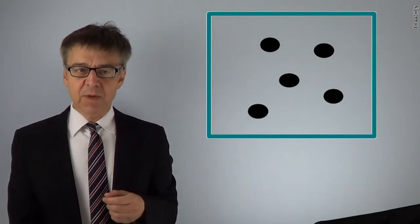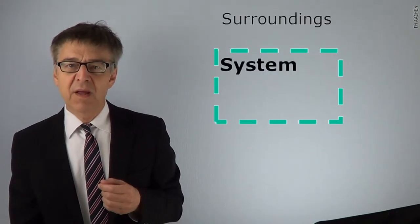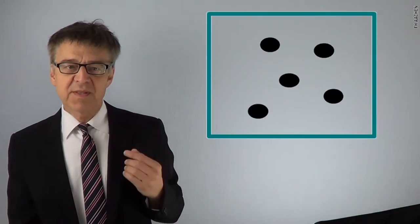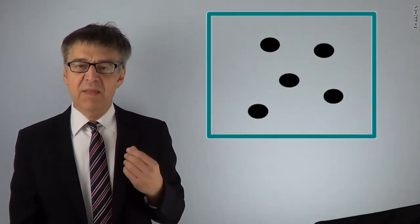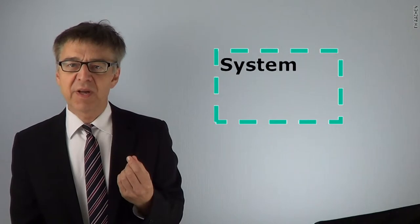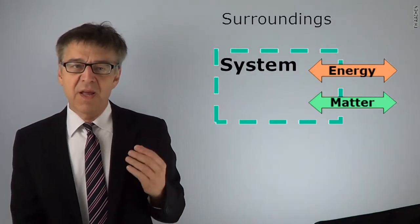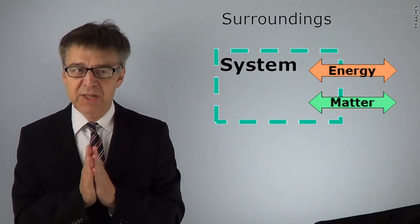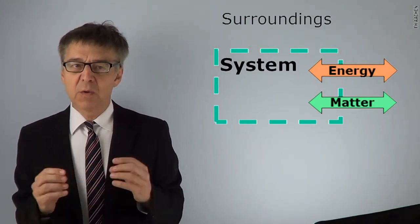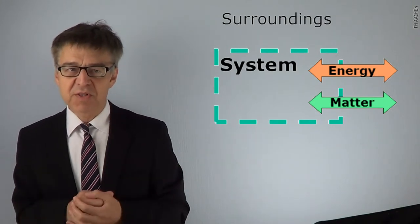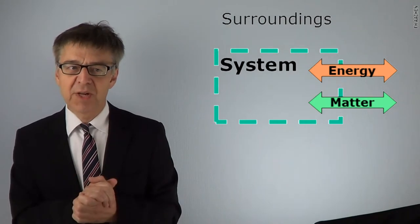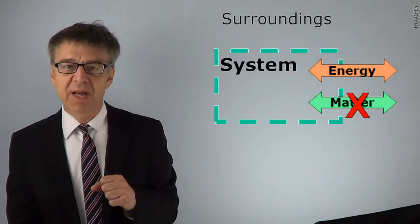The task of physical chemistry is to describe this system in numbers. Outside of the system is the surroundings. Between the system and the surroundings, there are real or imaginary boundaries. Depending on whether these boundaries are permeable to energy or mass, we speak of open systems, closed systems, and isolated systems. A very abstract formulation, but it's universally applicable.